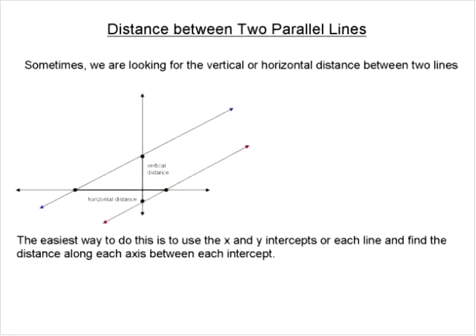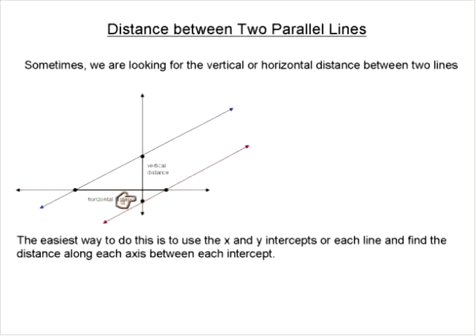We can now find the distance between two parallel lines. Sometimes when we're trying to find the distance between two parallel lines, we ask for different things. Sometimes we want the horizontal distance — the straight-line distance between the two. The vertical distance is straight up and down between the two, just like horizontal and vertical.